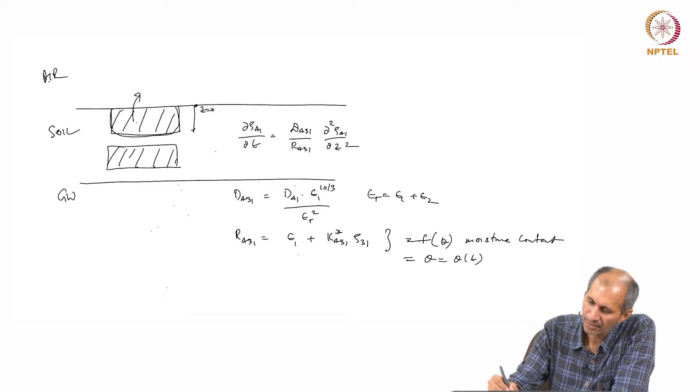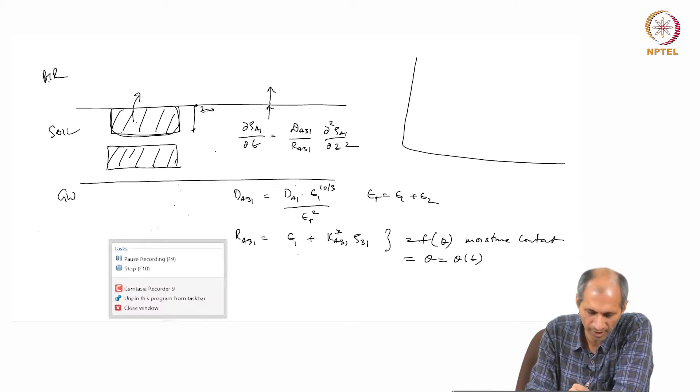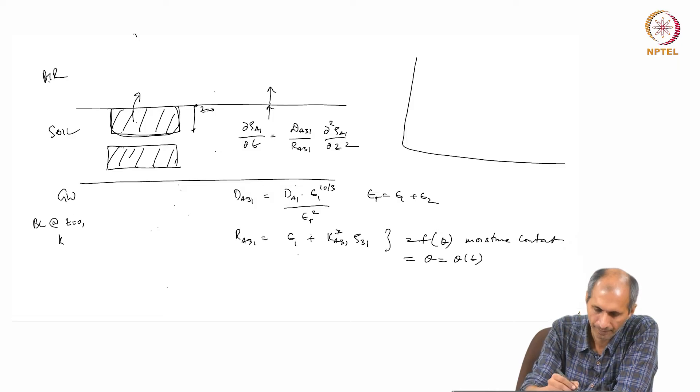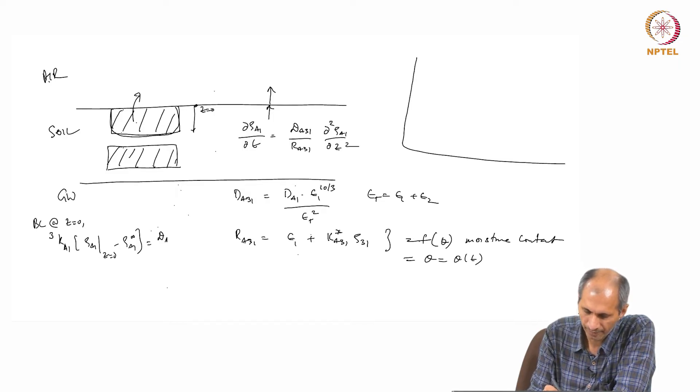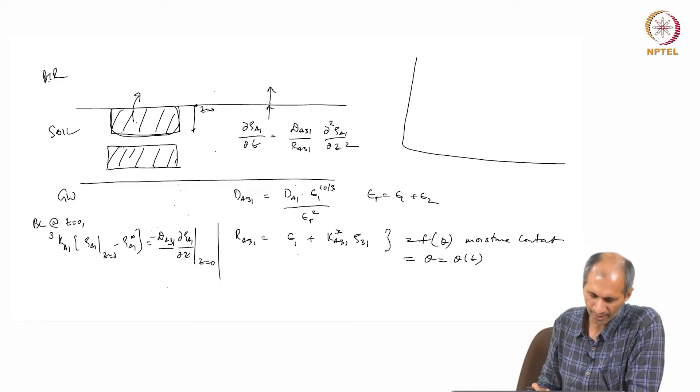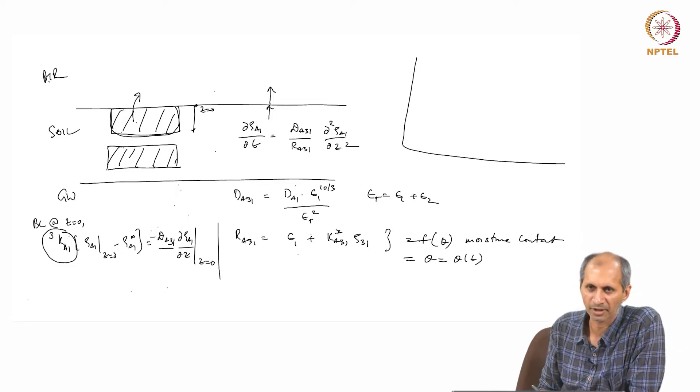So if I solve this equation, same boundary conditions. Diffusion is happening in the air and convection. The boundary condition at z equals 0 can be Ka13 multiplied by rho A1 at z equals 0 minus rho A1 infinity equals minus dA31 dρA1/dz at z equals 0. Same thing, all the same analysis for sediment replacement except its air vapor concentration. This is a mass transfer coefficient at the air soil interface, the convective mass transfer coefficient.